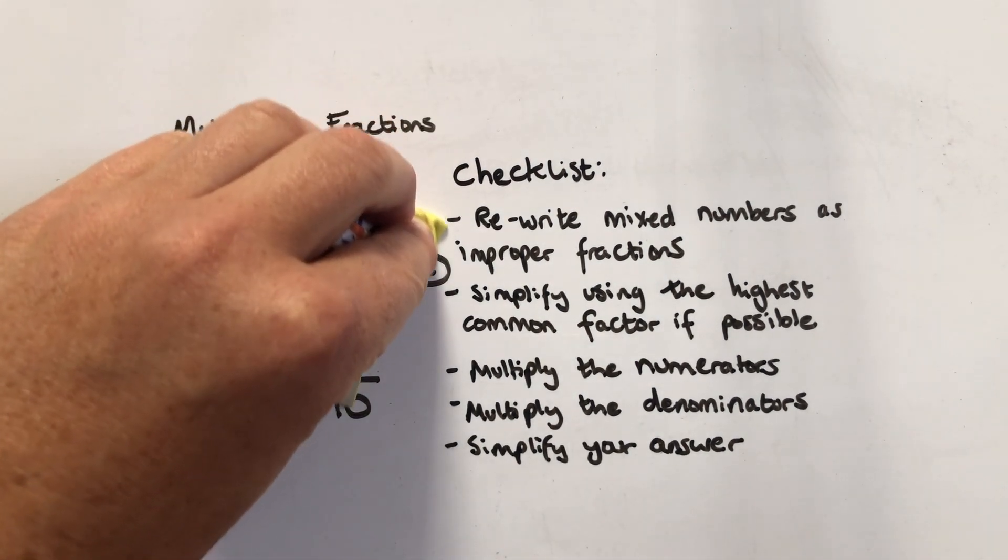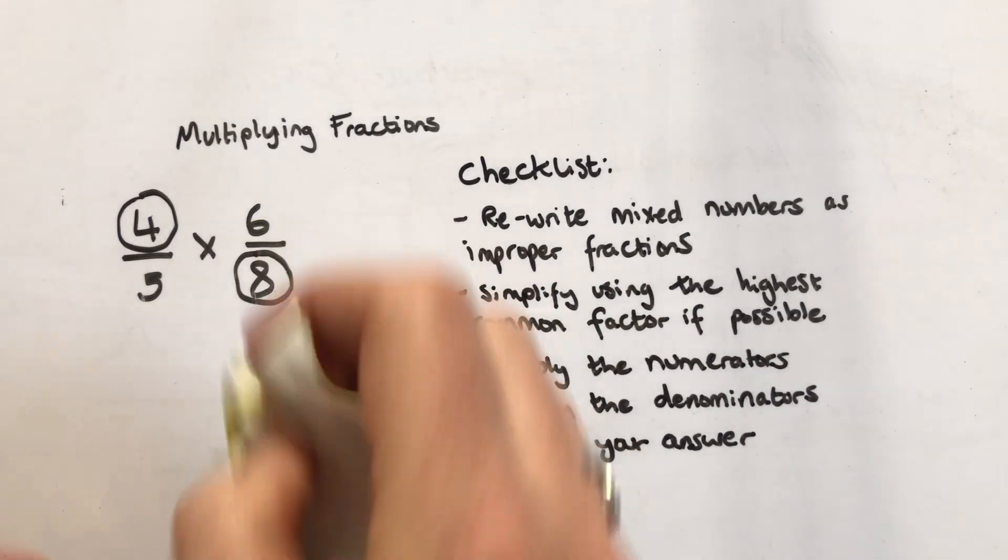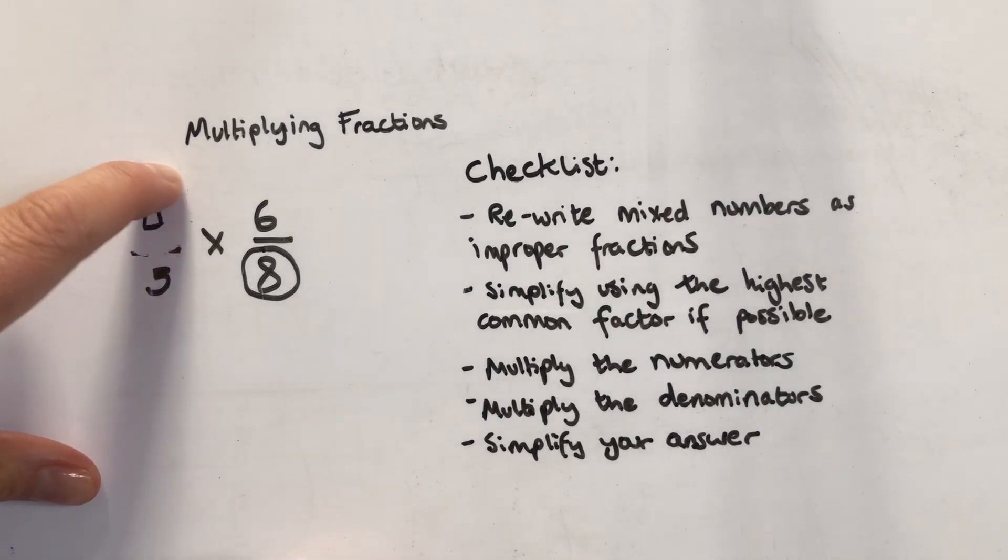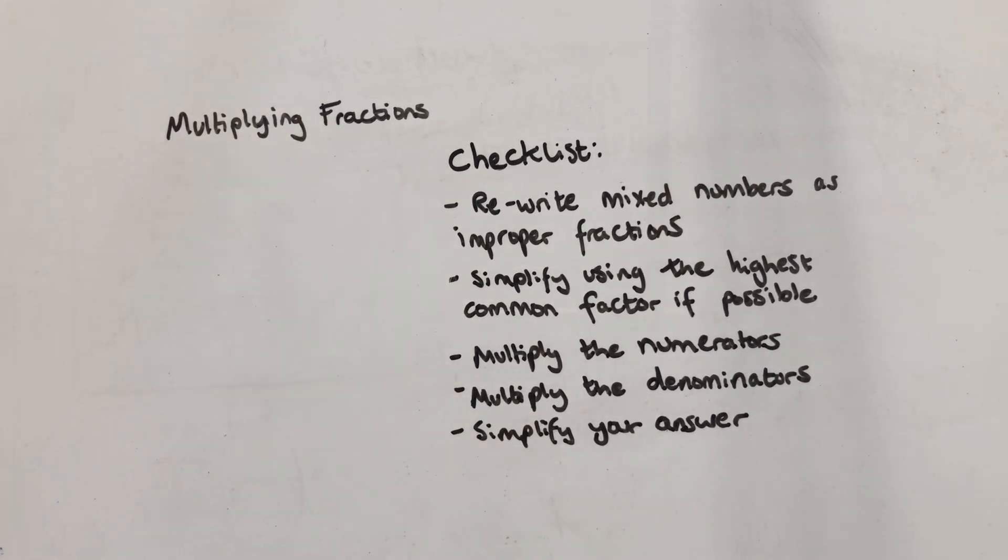If you find that a little bit too tricky, you can go back to this stage and instead of simplifying you just carry on like normal and simplify later.